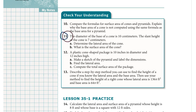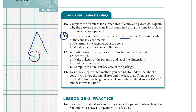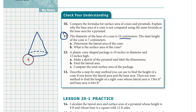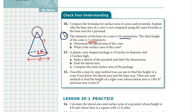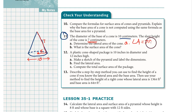Skip ahead to Check Your Understanding number 11. The diameter of a cone is 10 centimeters and the slant height is 7. Let's draw a picture — two diagonal edges coming downward, rounding off the bottom to show it's three-dimensional. All the way across is 10, so the radius is 5. The slant height of 7 goes along the diagonal edge. For question A, the lateral area formula is pi r l, so pi times 5 times 7, which gives 35 pi square centimeters.